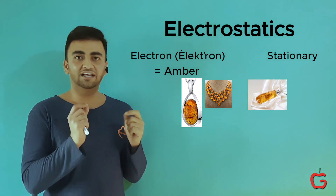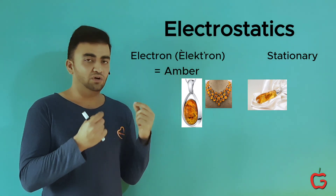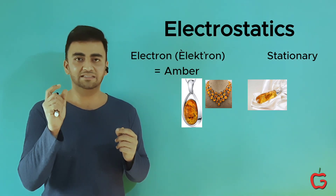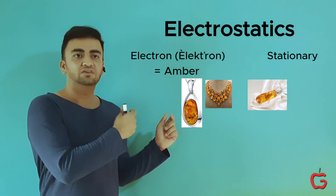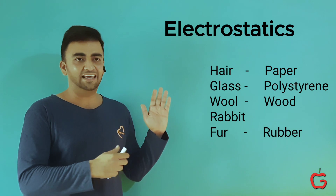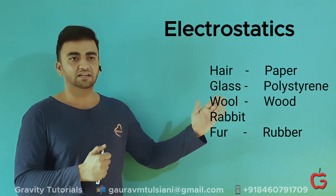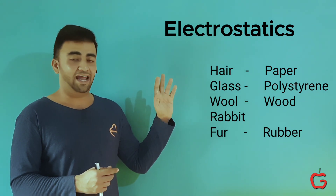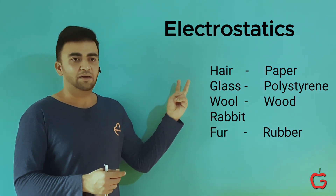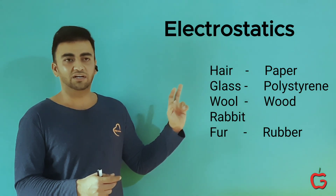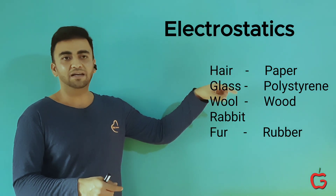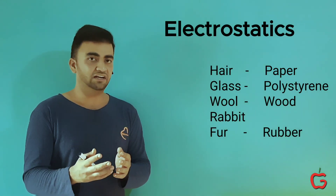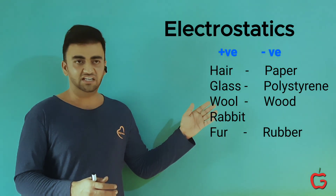This phenomenon of getting small shocks was so widespread that scientists began an organized study. They started taking ambers and rubbed them with different silk cloths, wool, and fur. They also rubbed different pairs of materials like hair with paper, glass with polystyrene, wool with wood, and rabbit fur with rubber. These different pairs of objects after being rubbed attracted each other and repelled in some cases — for example, hair and glass repelled each other, and paper and polystyrene repelled each other.